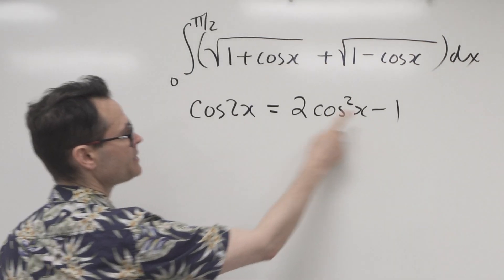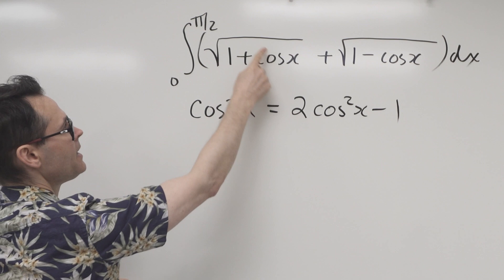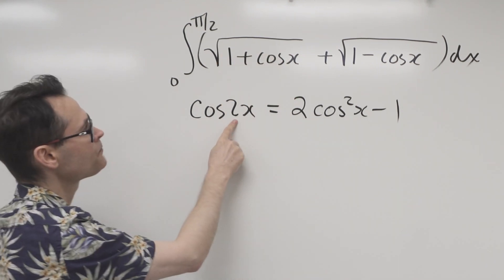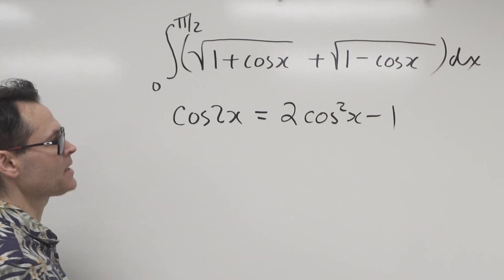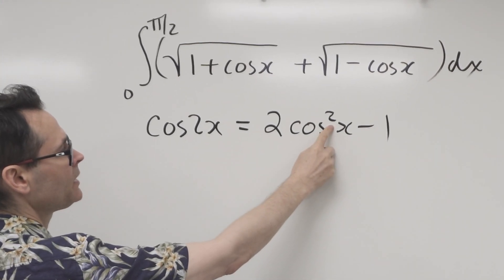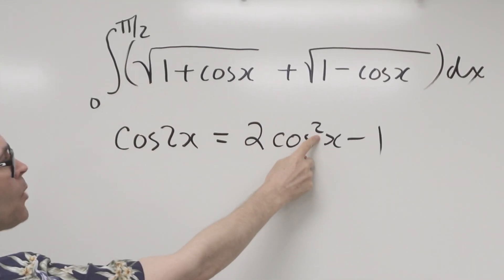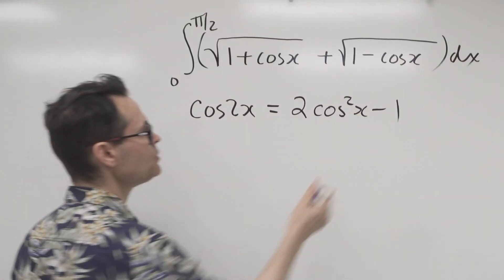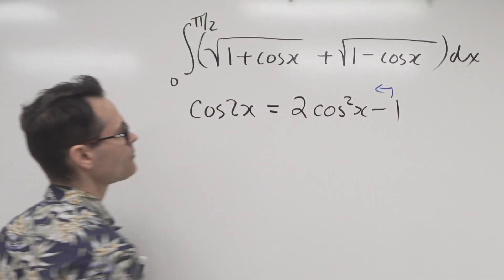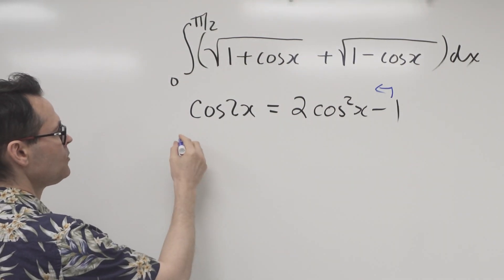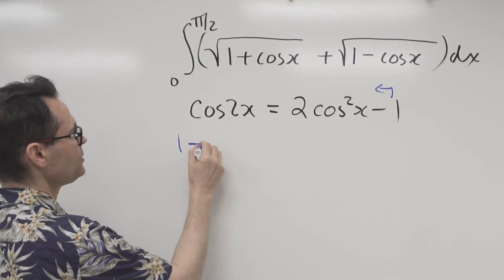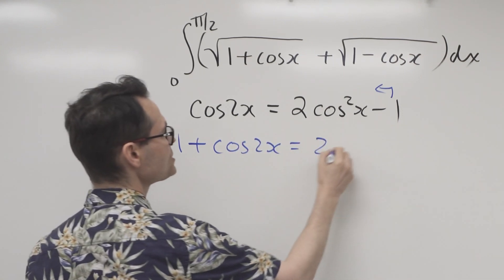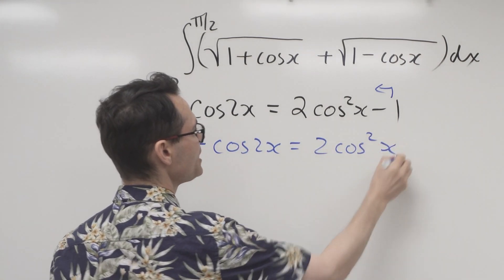Well, take a look. If I was to bring the minus one over to this side, I'm going to at least come close to a one plus a cosine, even though it's a double angle, but I might be able to do something for that too. And this square allows me to generate the square root. So watch, if I was to move the one over, then I'm going to end up getting 1 plus cosine 2x equals 2 cosine squared x.